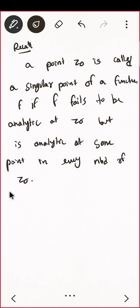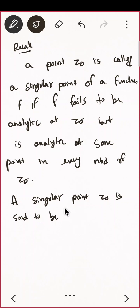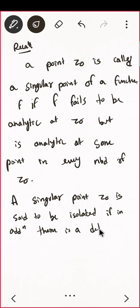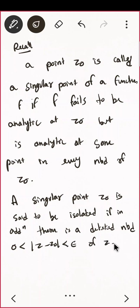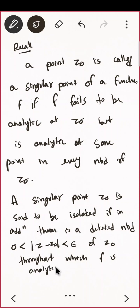In addition, a singular point z₀ is said to be isolated if there is a deleted neighborhood — 0 < |z − z₀| < ε — throughout which f is analytic. This is called an isolated singular point. It's called isolated because removing z₀, the function is analytic everywhere else.